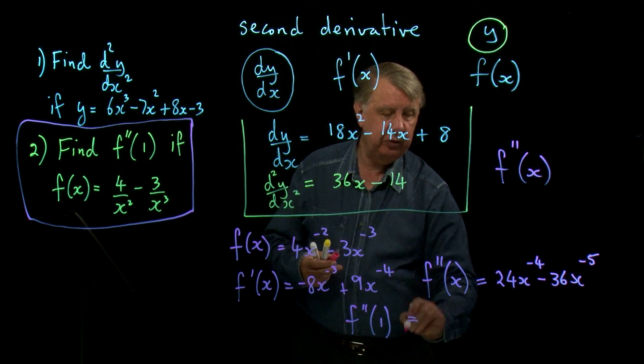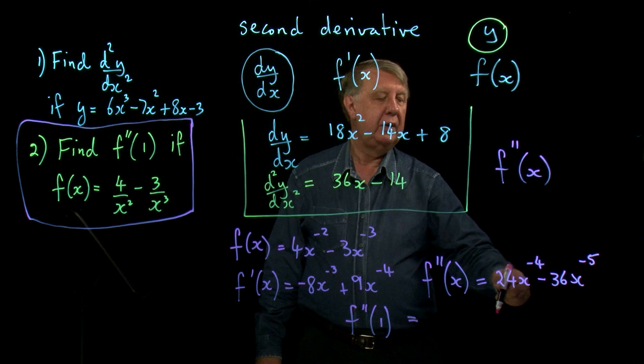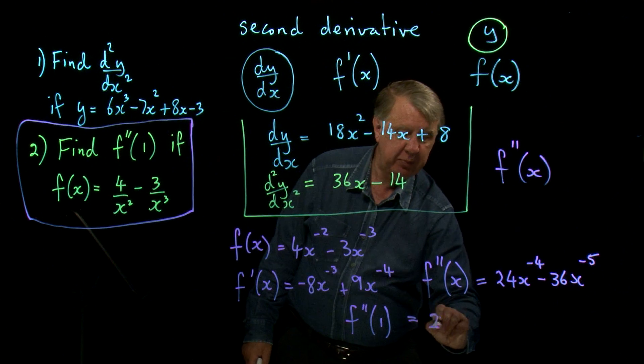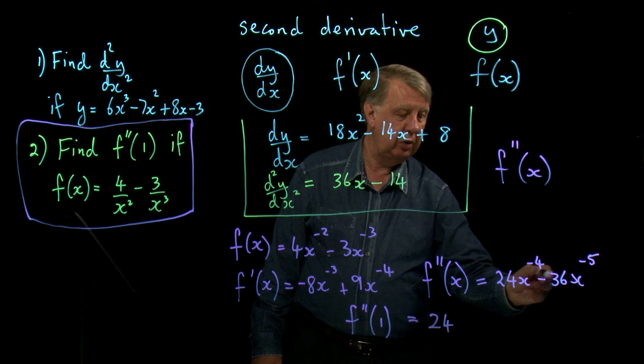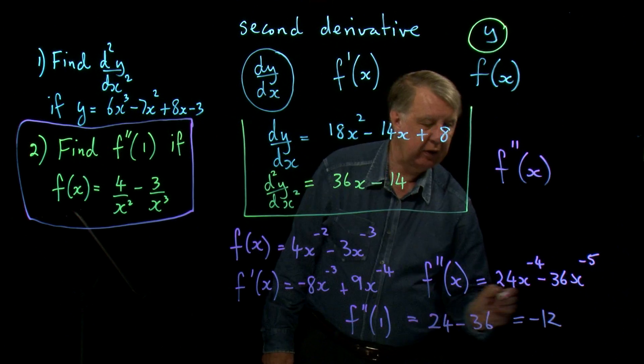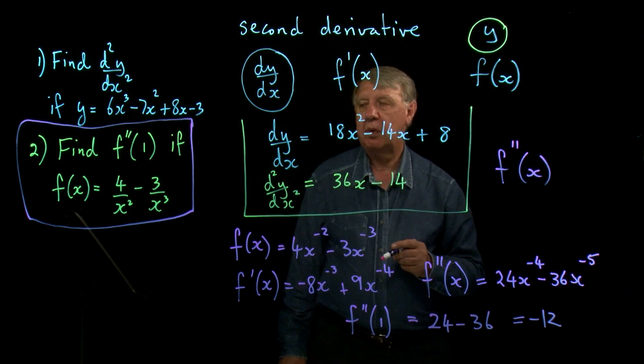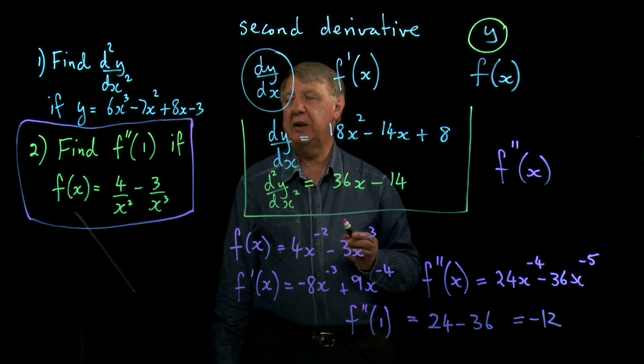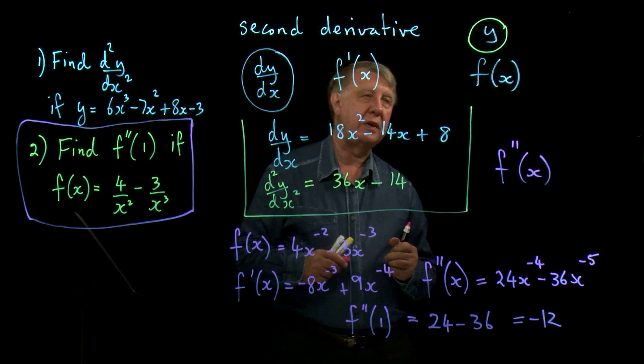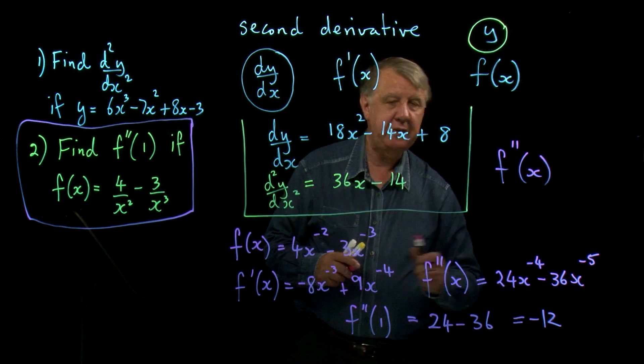So all I've got to do is put 1 in here. Remember, 1 to any power is 1. So it simply gives me 24 take away 36, which is negative 12. So the value of the second derivative of this function, when x equals 1, is negative 12.